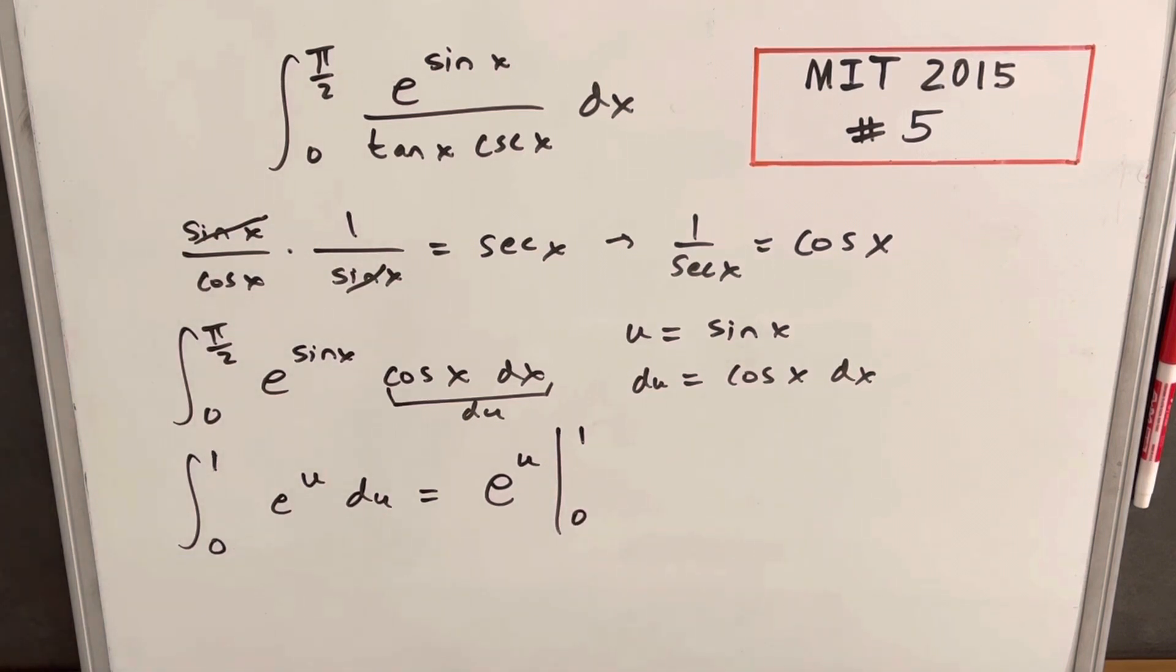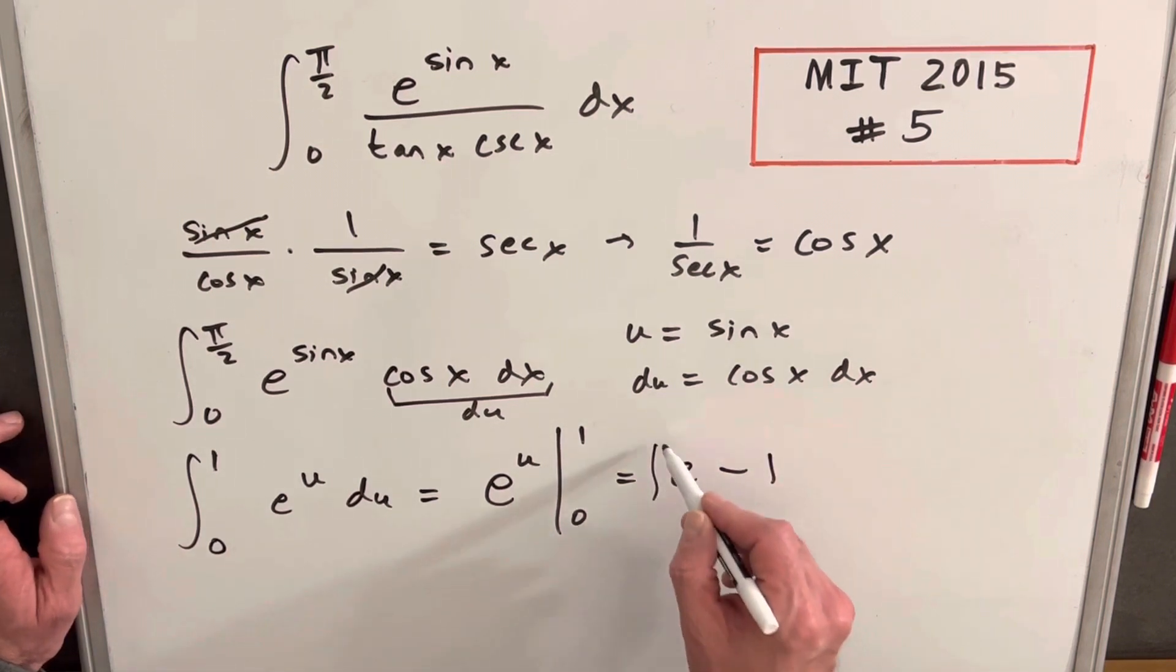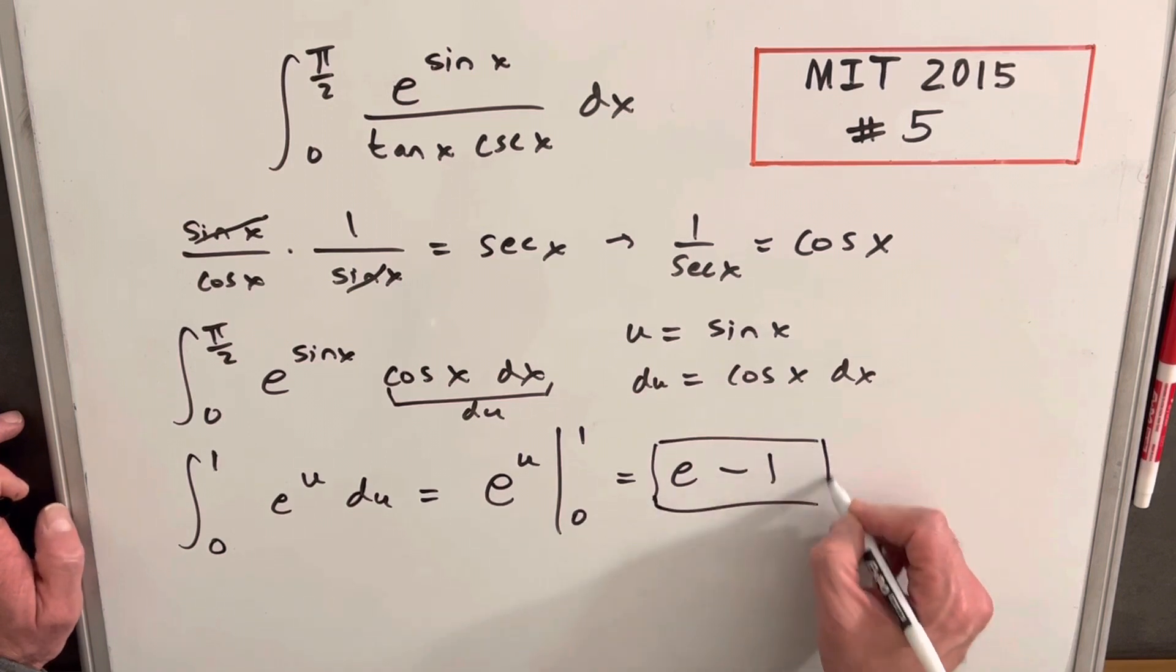So we just need to evaluate this from 0 to 1. First we'll plug in 1, we end up with e to the 1, but we can just ignore the 1 up there, minus e to the 0. e to the 0 is just 1, and we're left with a very clean answer, e minus 1.